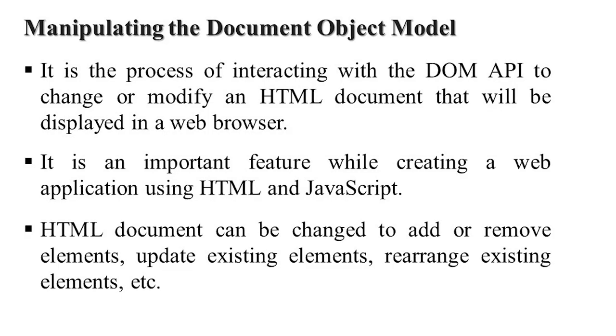The Document Object Model provides a programming interface — for example, a button to change colors when clicked, or an image that slides when the mouse hovers over it. This is interactive and dynamic behavior. Manipulating the Document Object Model is the process of interacting with the DOM application programming interface to change or modify the HTML document displayed in the web browser. This is an important feature when creating web applications using HTML and JavaScript.